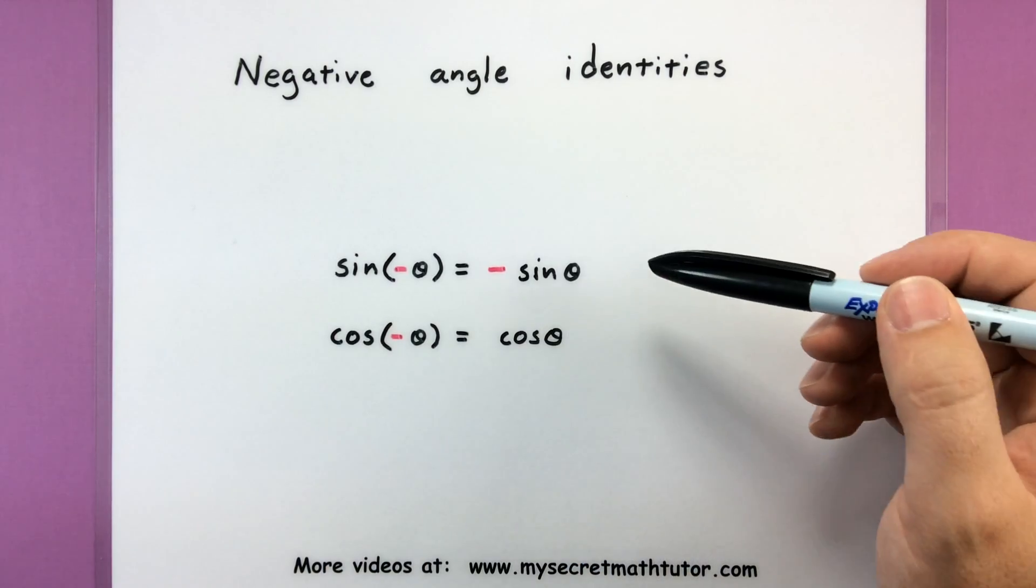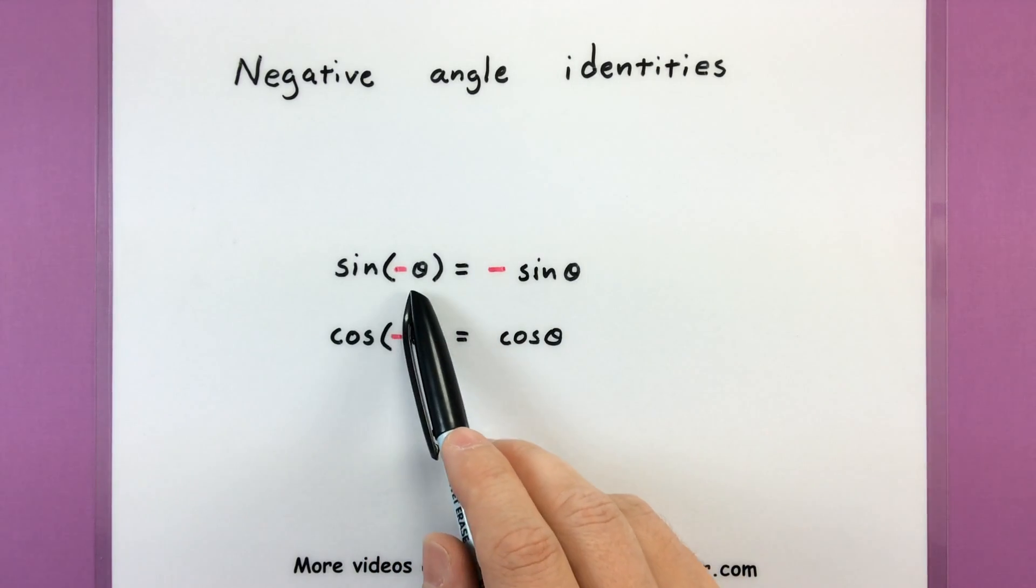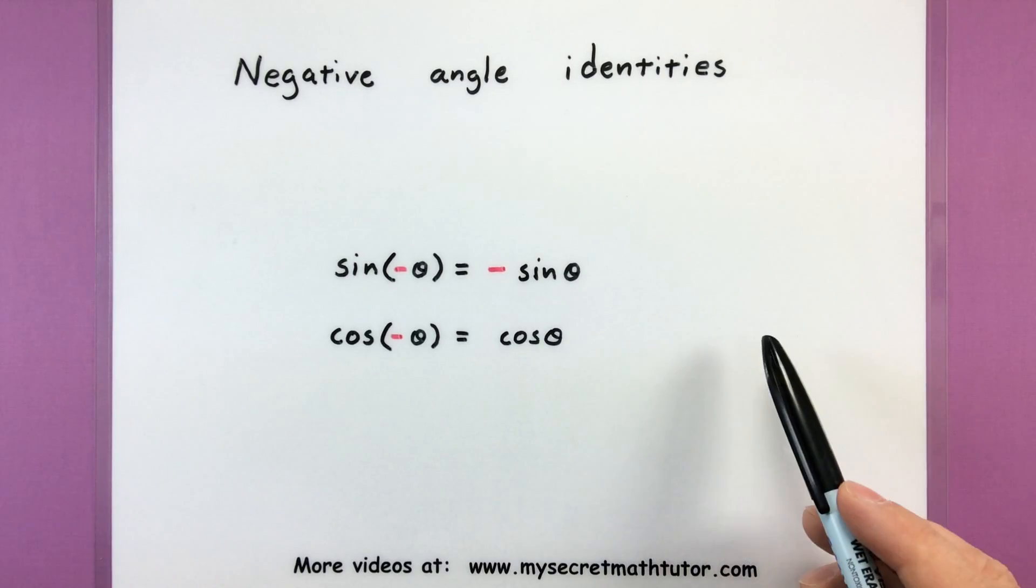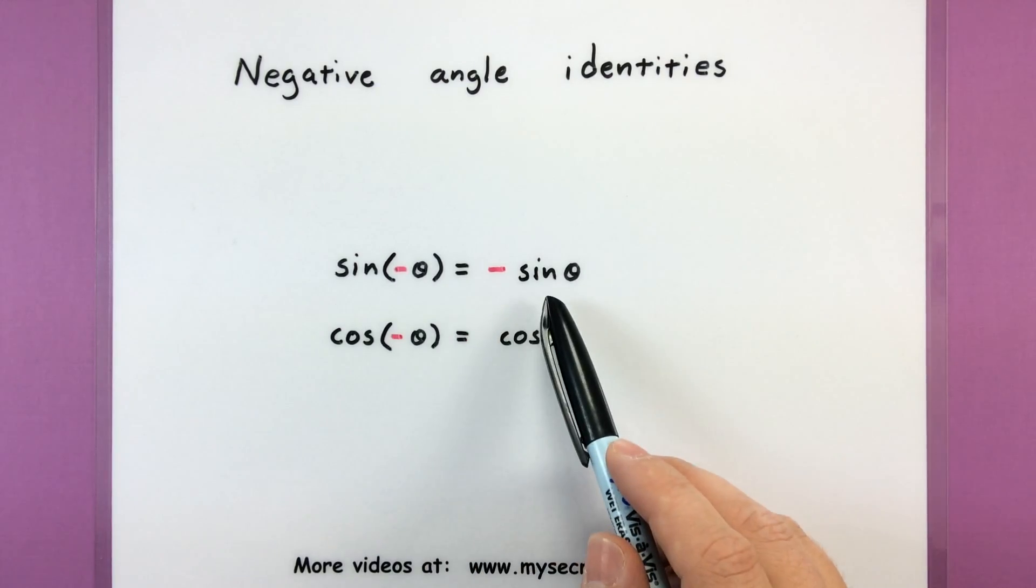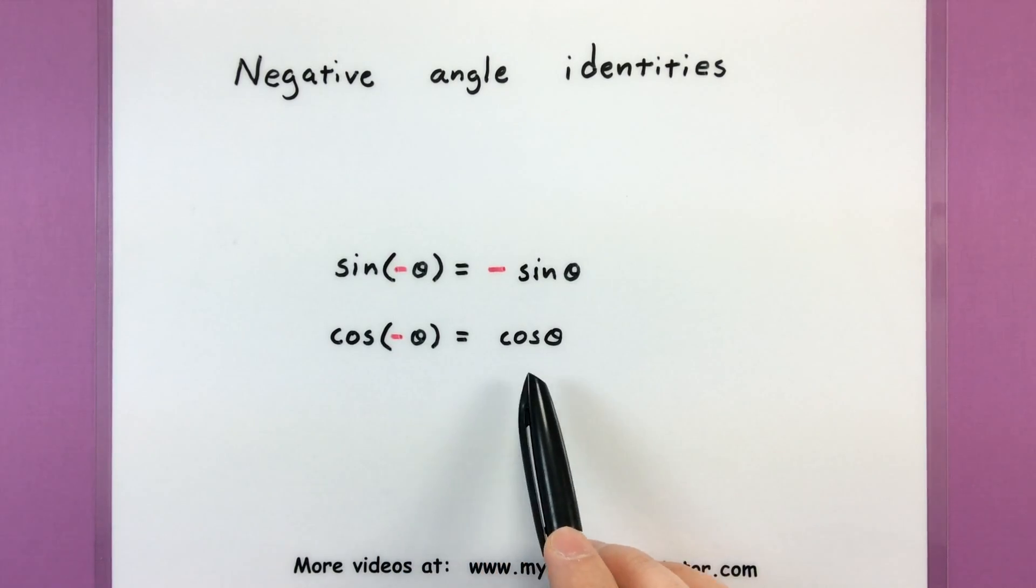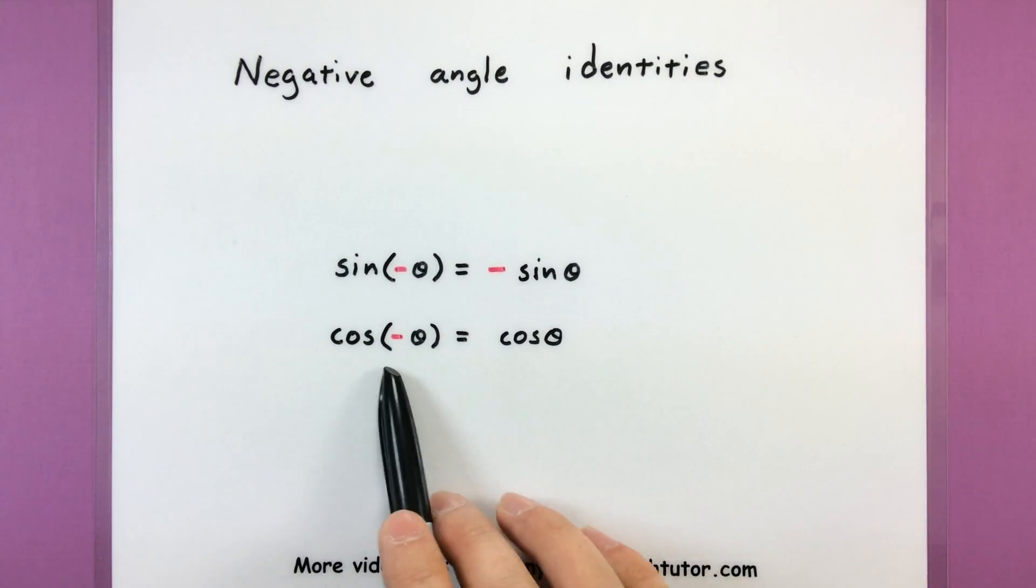These are really interesting identities in that they give us information of what to do when we have a negative angle. And here's the first two that you really want to keep in your back pocket. If you have sine of negative an angle, it equals the negative of the sine of the positive angle. So you can see that negative sign is just coming out front. If I have cosine of a negative angle, then it's simply equal to just cosine of the positive angle. So in this case, the negative sign goes away entirely.